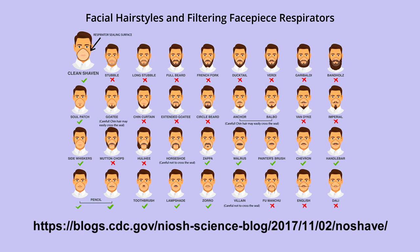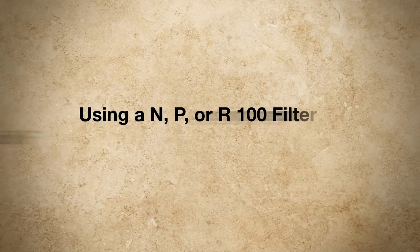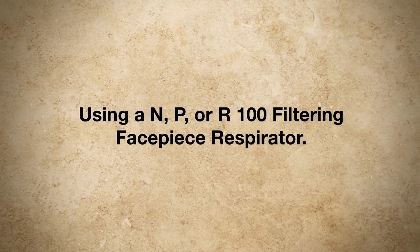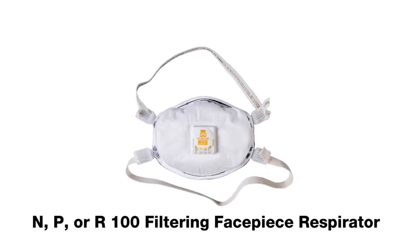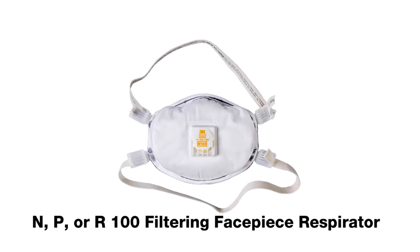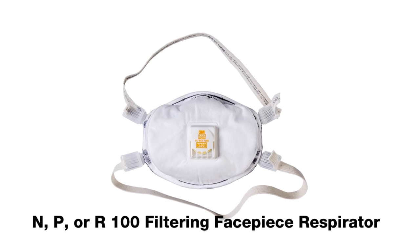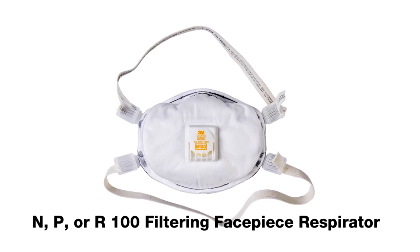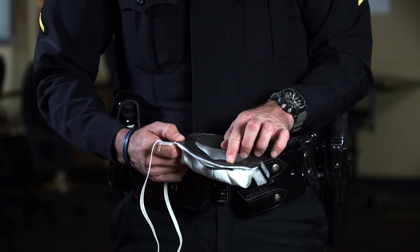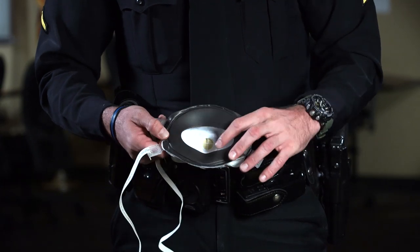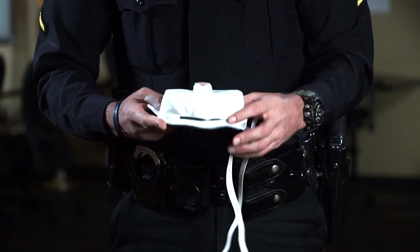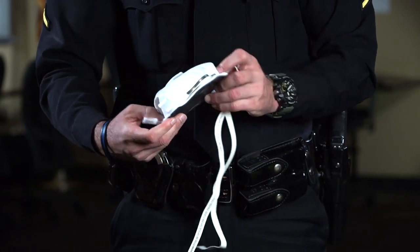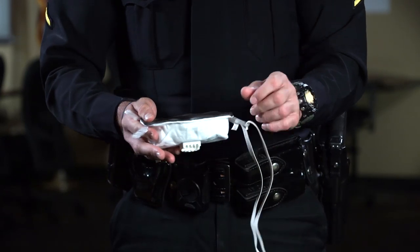Discuss alternative respiratory protection options with your department. The following are general instructions for correctly donning, conducting a user seal check, and doffing a disposable N, P, or R100 filtering facepiece respirator. Before starting the donning process, inspect the respirator including the straps for tears or damage. If you find any damage to the respirator, do not use it. Replace it with a new one.